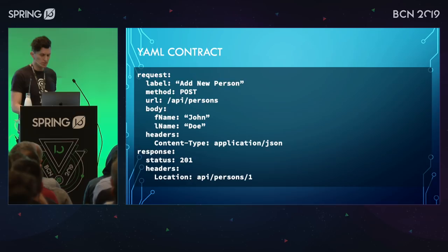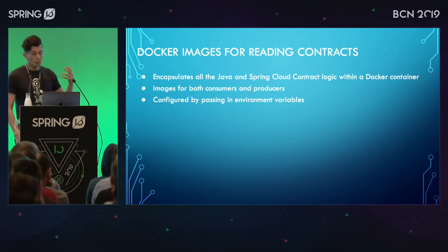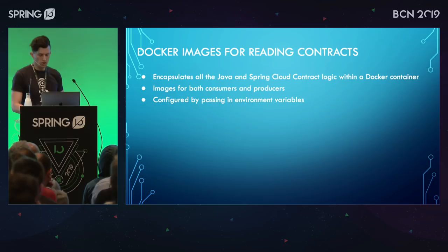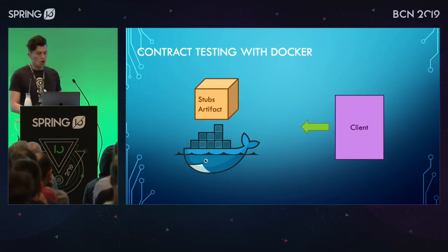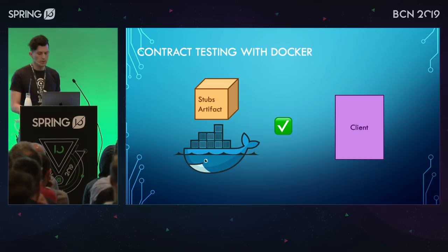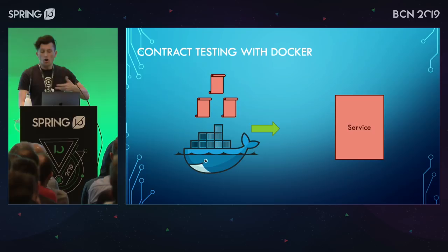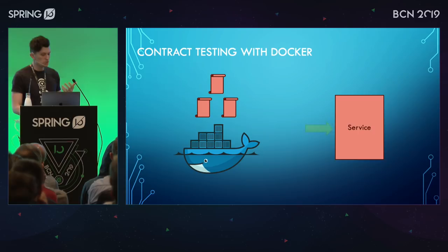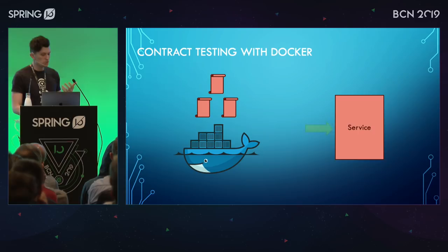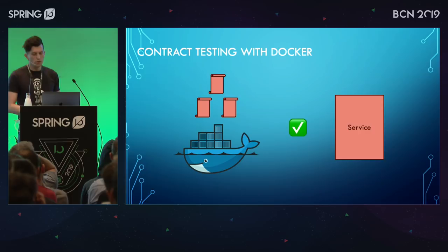We have Docker images for running these contracts. They encapsulate all the Java and Spring logic within the Docker container, so all you need is Docker. There are images for both the consumer side and the producer side, and they can be configured by passing in environment variables. If you're the client, you can call this Docker image that brings in the stubs artifact and test to see if your client will work against that — a good stand-in for the actual live service. Alternatively, you can have the Docker image bring in these contracts and test to make sure the service actually works against them.